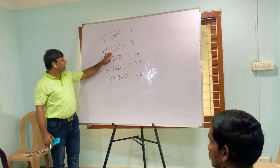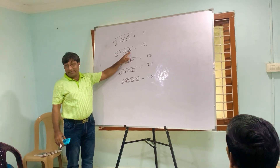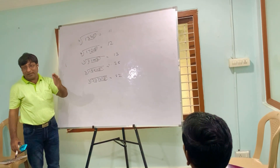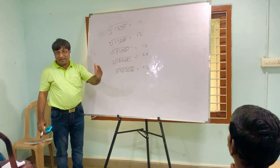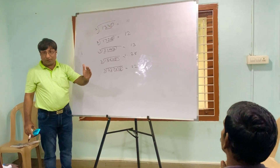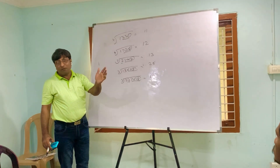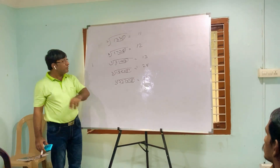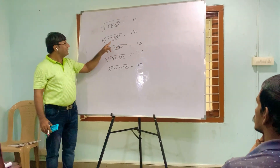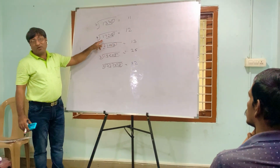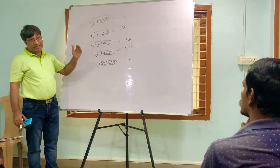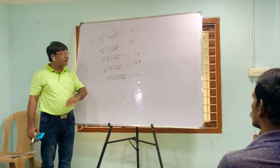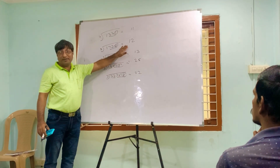For a number ending in 8: unit is 8. Multiply 8 three times: 8 × 8 = 64, unit 4; 4 × 8 = 32, unit is 2. Write 2. Left number is 1, and 1³ = 1, so the answer is 12.